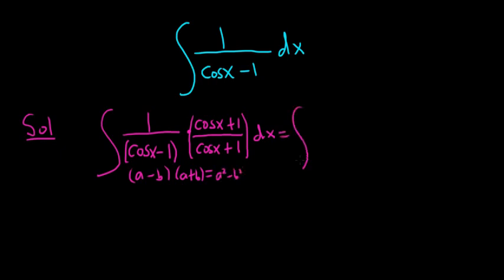So this becomes the integral. The top remains unchanged. It's 1 times cosine x plus 1. So that's cosine x plus 1 over, and then the bottom is going to be cosine squared minus 1 squared, which is just 1. It's a squared minus b squared. So you square the cosine, you subtract, and you square the 1.